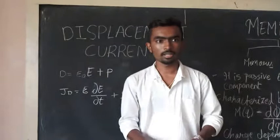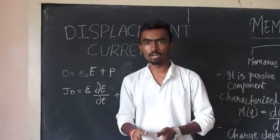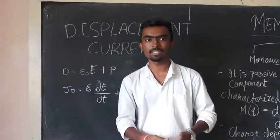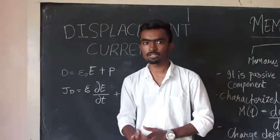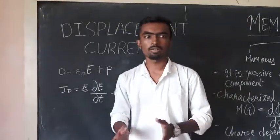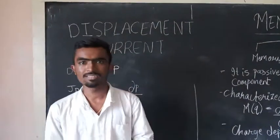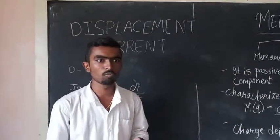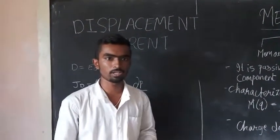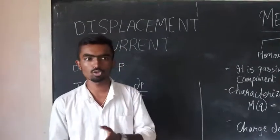The displacement current density has the same unit as electric current density and it is the source of the magnetic field, just as actual electric current of moving charges, but with a time varying electric field in physical material.